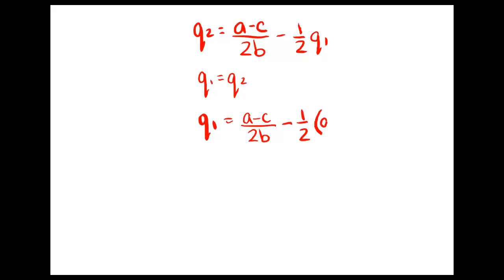Similarly, we can say that Q2 equals (A - C)/2B minus (1/2)Q1. And our equilibrium is where quantity 1 equals quantity 2. So we can just take our expression for Q1, and instead of putting in Q2, we're just going to put in Q1 because we know that they're going to be equal. And then we can solve this equation. So we'll bring over the (1/2)Q1 to the left-hand side.